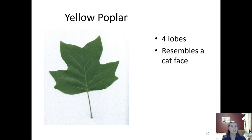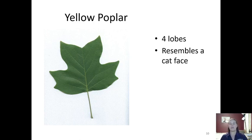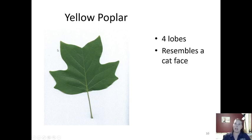Next we're looking at yellow poplar. Yellow poplar is sometimes referred to as tulip poplar because it has a flower in the springtime that looks like a tulip, but the Virginia Department of Forestry calls it yellow poplar. It has four lobes — one, two, three, four — and it kind of looks like a cat's face, with the top lobes like ears and the lower lobes like whiskers. That's our yellow poplar.